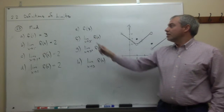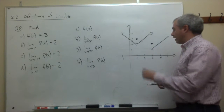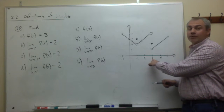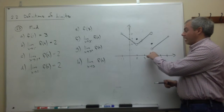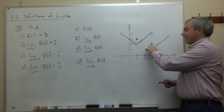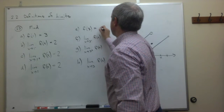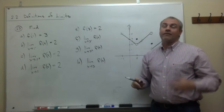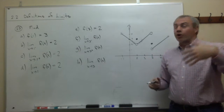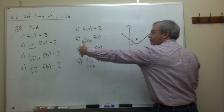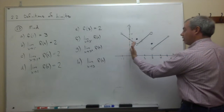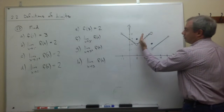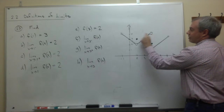Now let's look at the second grouping of questions. Part e asks: what's f(3)? That's just asking whether there's a functional value directly above or below x = 3. Looking up, we see there is a point above 3 at y = 2, so f(3) = 2. Part f asks for the limit as x goes to 3 from the left — coming from the negative side — and as we approach 3, the y-values are getting closer and closer to 4.